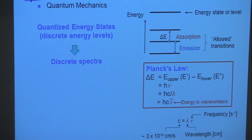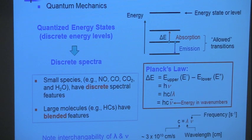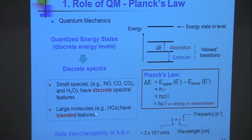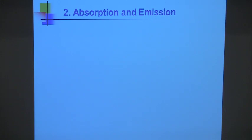Small species like nitric oxide, carbon monoxide, CO2, and water have discrete spectral features — we can think of them as having discrete energy levels. Large molecules like a fuel molecule such as octane have so many energy levels that they blend together and we cannot see the discrete structure; we call those blended features. It's important to go back and forth between different ways of expressing energy. Types of spectra we're dealing with for the most part are absorption, emission, fluorescence, or scattering. Common types of scattering include Rayleigh scattering and Raman scattering.